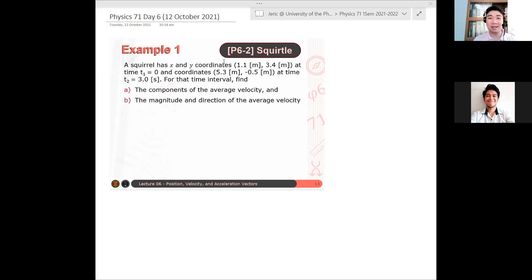So a squirrel has x and y coordinates. So let's say we have a squirrel, looks like this. So initially, it's at 1.1, 3.4, figure not drawn to scale. So this is its initial position.